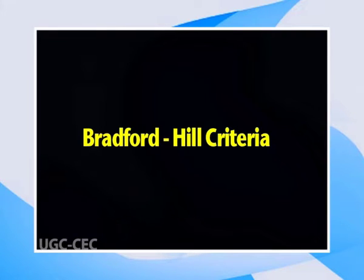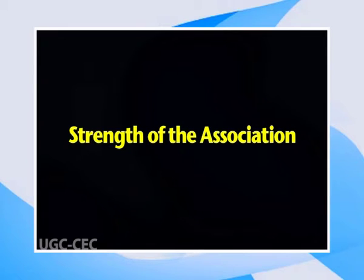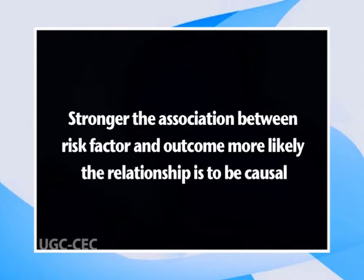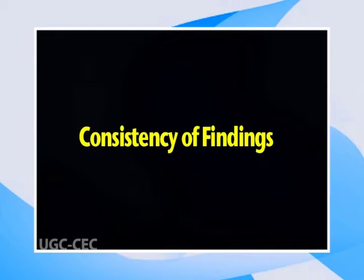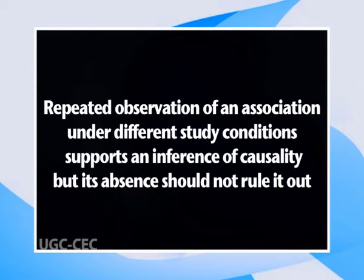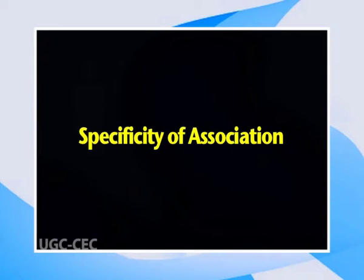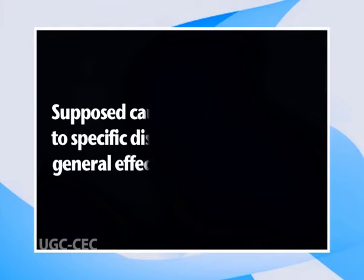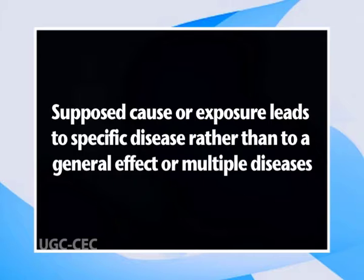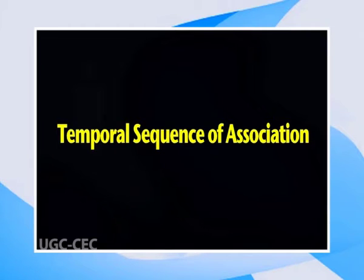The Bradford Hill criteria are widely used in epidemiology as providing a framework against which to assess whether an observed association is likely to be causal. First is the strength of the association: the stronger the association between a risk factor and outcome, the more likely the relationship is to be causal. Second is consistency of findings: repeated observation of an association under different study conditions supports an inference of causality, but its absence should not rule it out. Third is specificity of the association: a supposed cause or exposure leads to a specific disease rather than a general effect or multiple diseases.